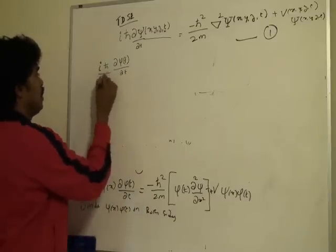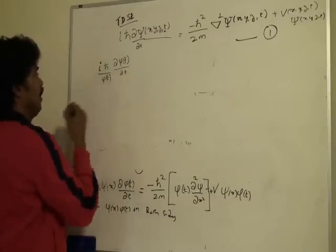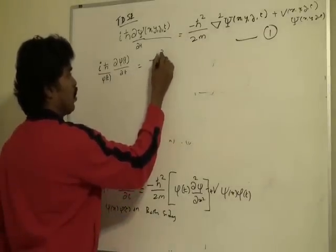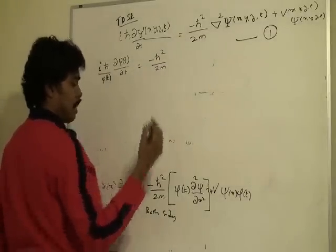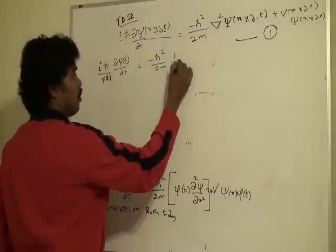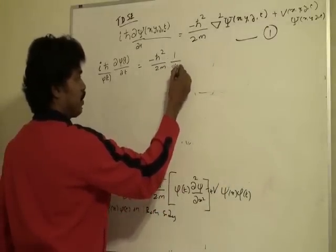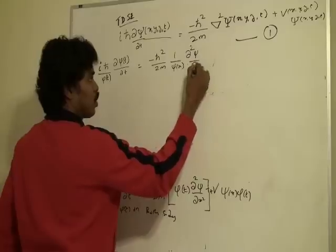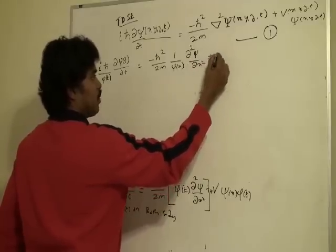Then we have 1/φ of t equal to -ℏ²/2m. Then again, this becomes 1/ψ of x ∂²ψ/∂x² plus V.